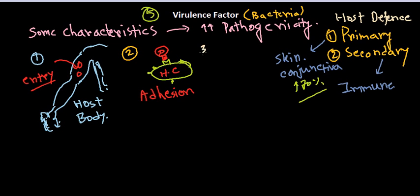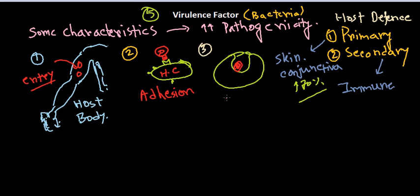The third step of this process is engulfment — the bacteria enters into the host cell. Through receptor-mediated endocytosis and similar processes it is engulfed. We can also call this the propagation of the organism. After this propagation, the organism is now inside the host cell.